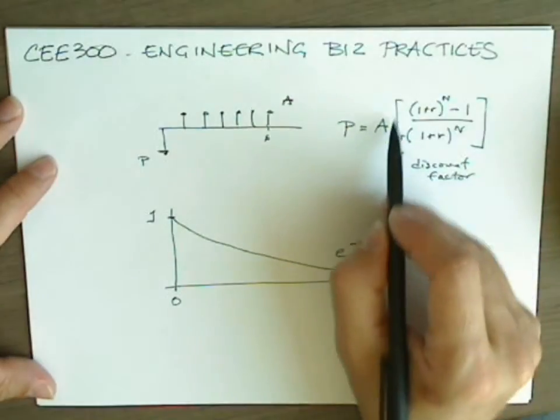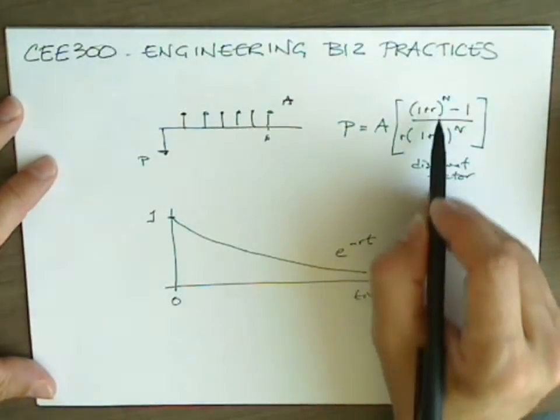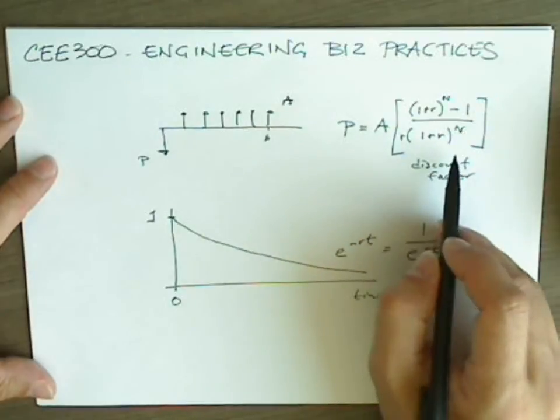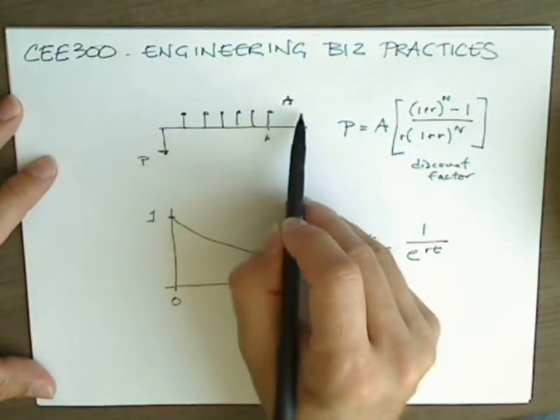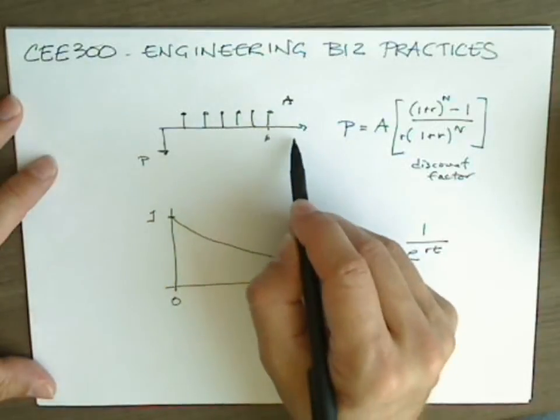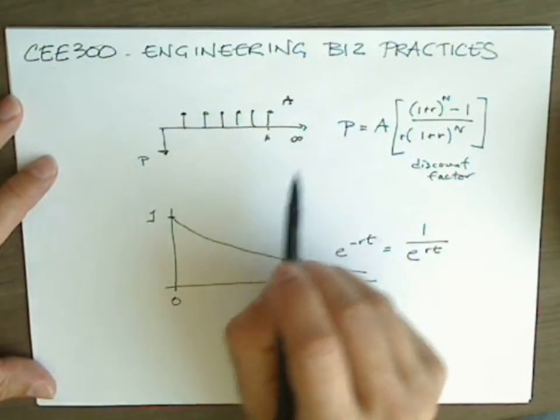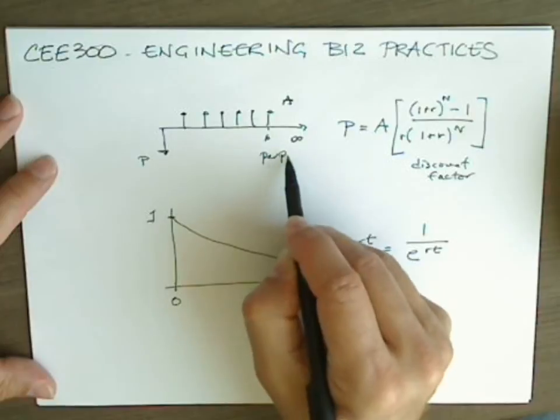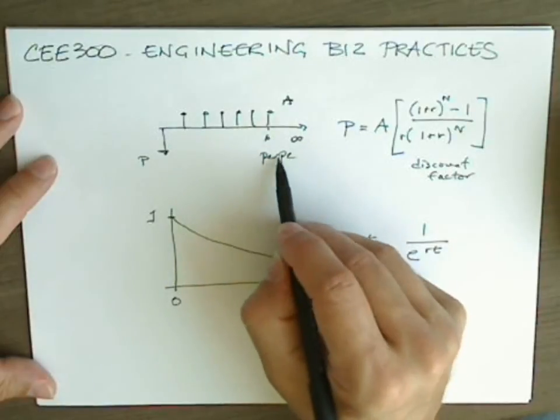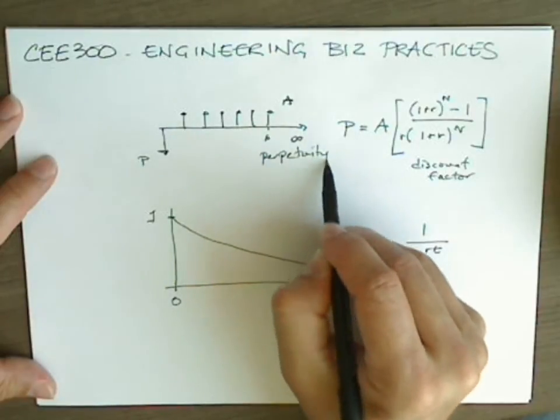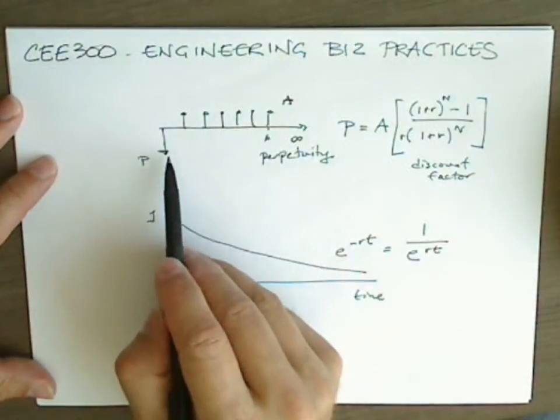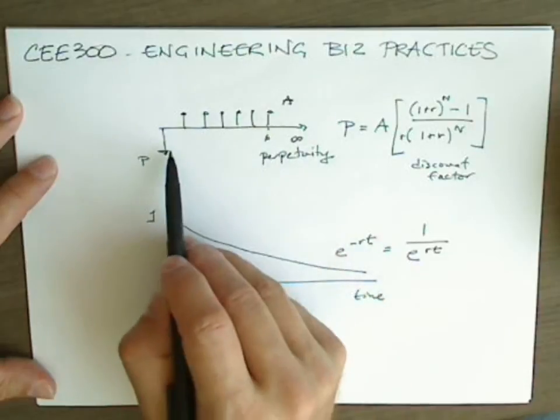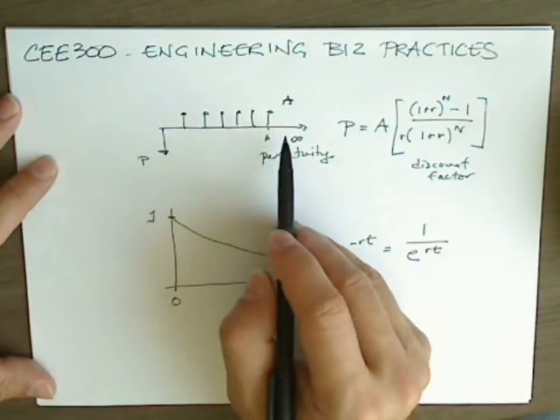But in this version of the formula, we reach a certain complication with a special kind of bond, or a special kind of cash flow diagram, that extends out for perpetuity. In this case, perpetuity means to infinity. Now, that might seem crazy, but in the 18th century, the British government issued bonds that were perpetual.